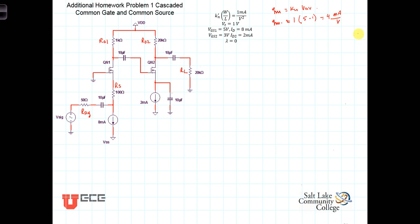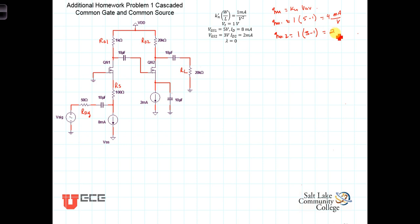We need to be careful with the units — KN is in terms of milliamps, so gm is in terms of milliamps per volt. Similarly, gm2 equals KN times (VGS minus Vt), which is 3 minus 1, giving us gm2 equal to 2 milliamps per volt.